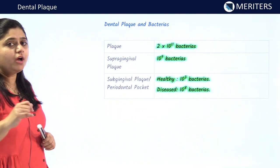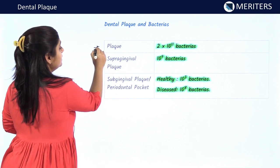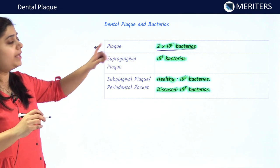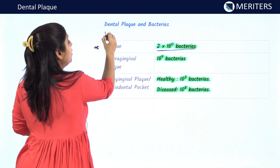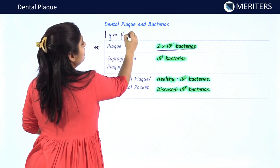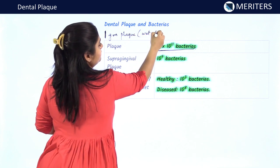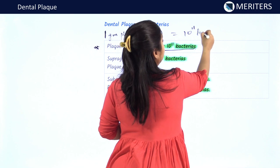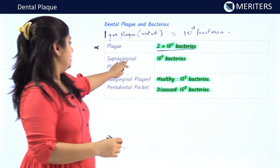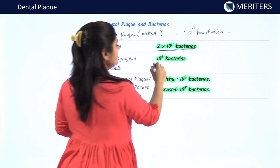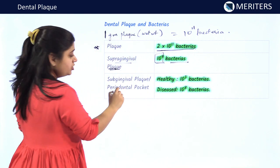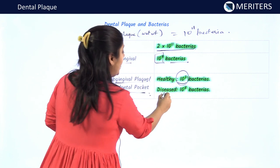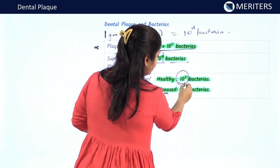Some very important facts for MCQs: plaque contains 2 × 10 to the power of 11 bacteria. One gram of plaque in wet weight contains 10 to the power of 11 bacteria. Supra-gingival plaque above the marginal gingiva contains 10 to the power of 11 bacteria. The sub-gingival plaque or periodontal pocket of a healthy individual contains 10 to the power of 3 bacteria, and in a diseased condition like periodontitis, the amount of bacteria present is 10 to the power of 8.